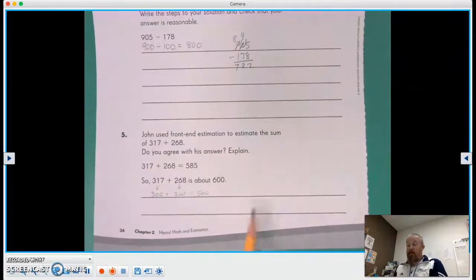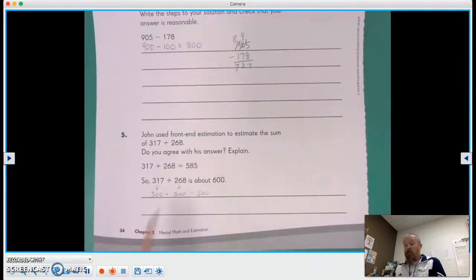Now in this case, this example, 600, is technically closer to the real answer. But front-end estimation is only at 500. That's why his answer's off a little bit.